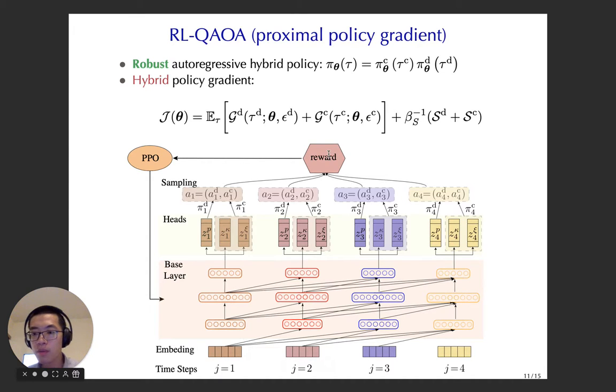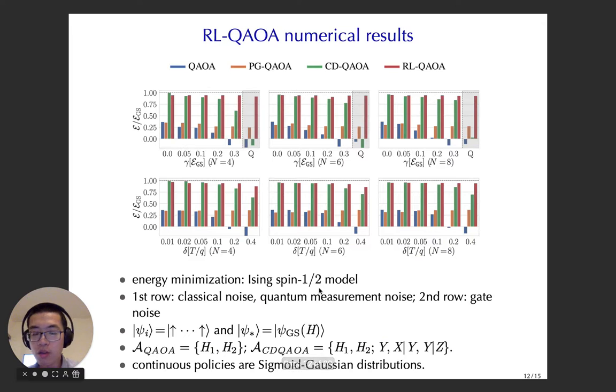In order to do the optimization here, we apply the proximal policy gradients. So you get the feedback from the quantum simulators. And now you use these feedbacks and use this experience to update your parameter here. And here, it also shows some numerical results. You can see with different kinds of noise, say the classical, quantum, and gate noise, the RL-QAOA beats the CD-QAOA and also PG-QAOA, and it remains like a high fidelity at different cases.